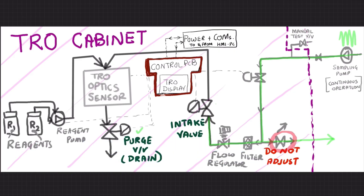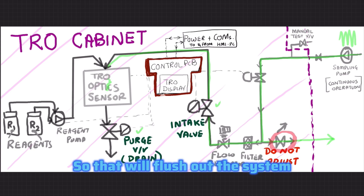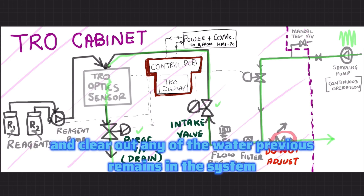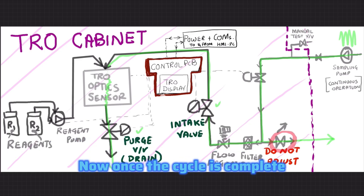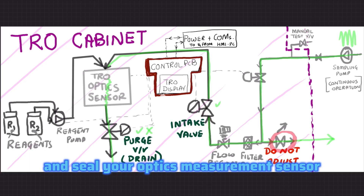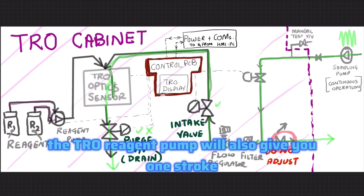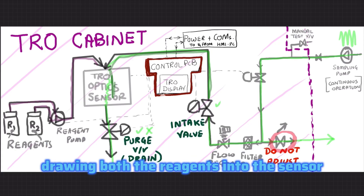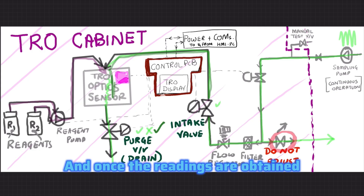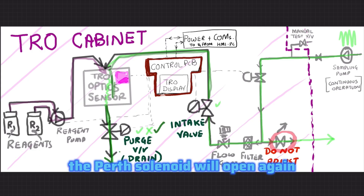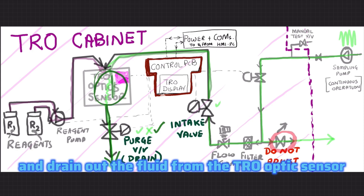The purge valve will open first along with the intake valve to flush out the system and clear any previous water remaining in the system. Once the flush cycle is complete, the purge valve will shut and seal the optics measurement sensor. The intake valve will then open up slowly with a pulsating note, and along with the intake sample, the TRO reagent pump will give one stroke drawing both reagents into the sensor. Once the readings are obtained, the purge solenoid will open again and drain out the fluid from the TRO optic sensor.